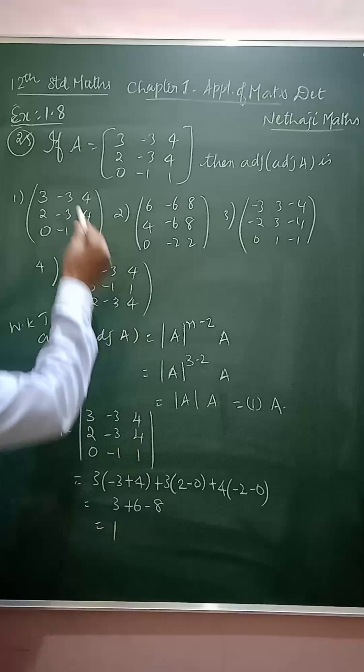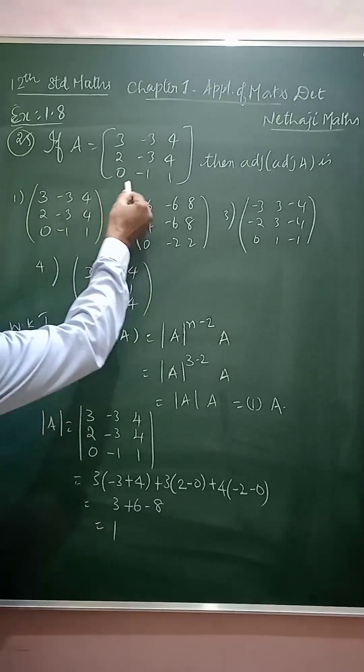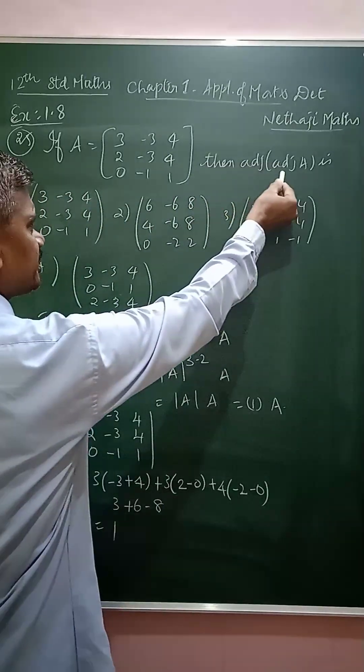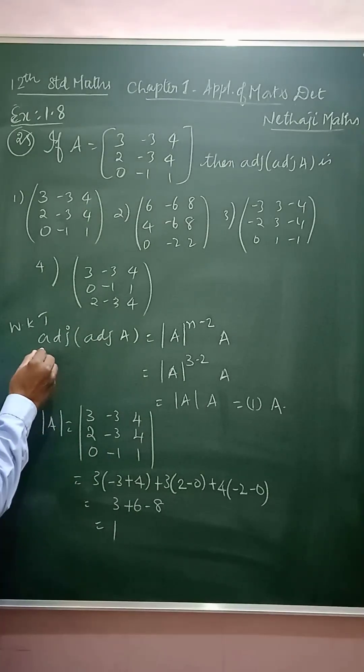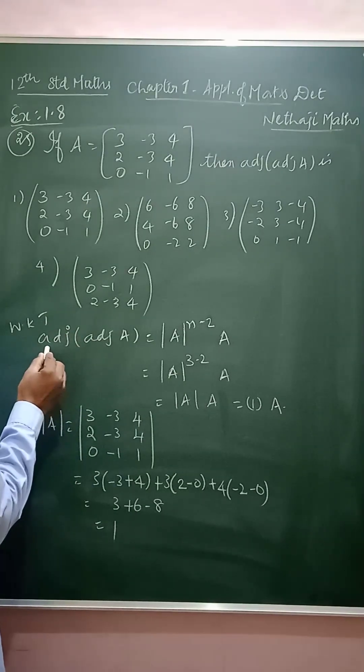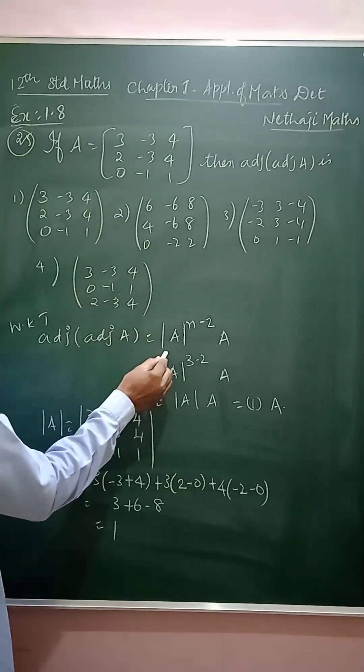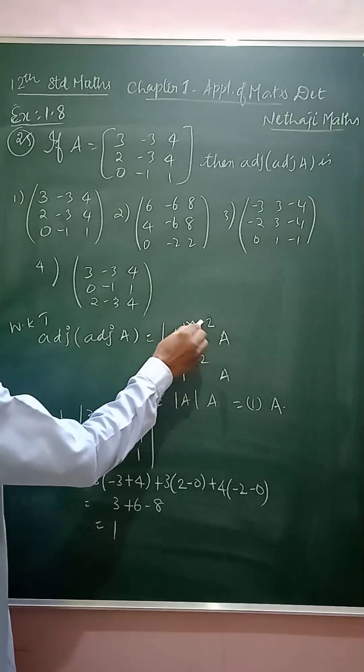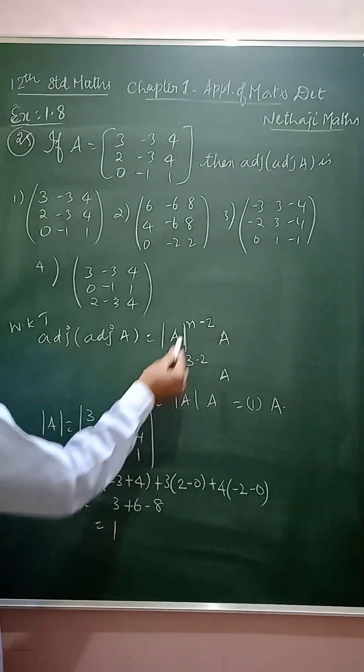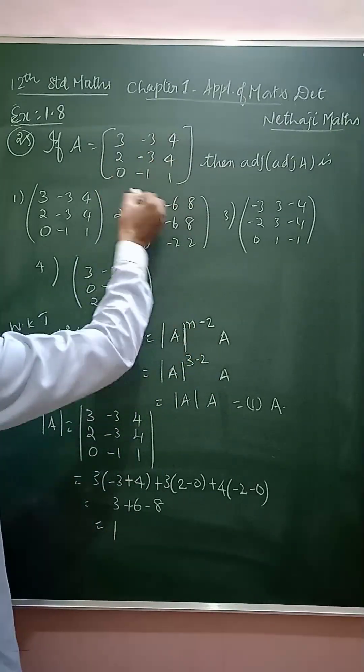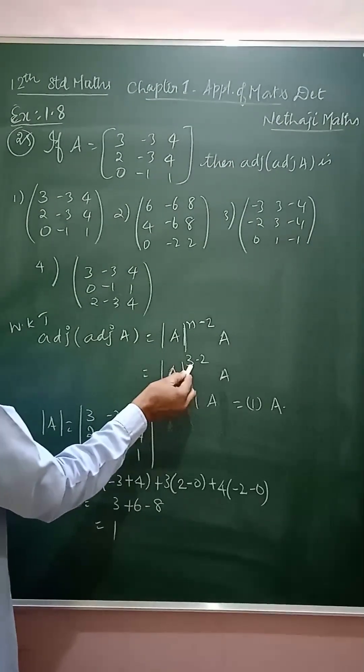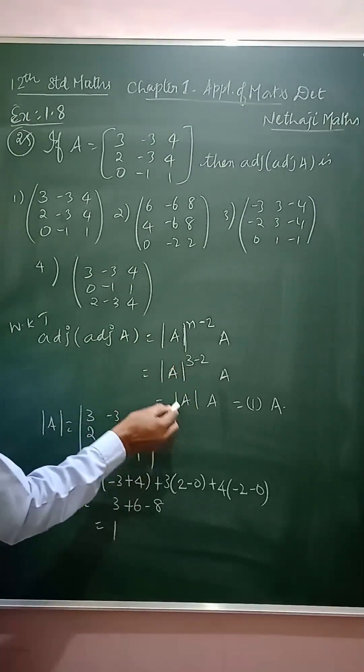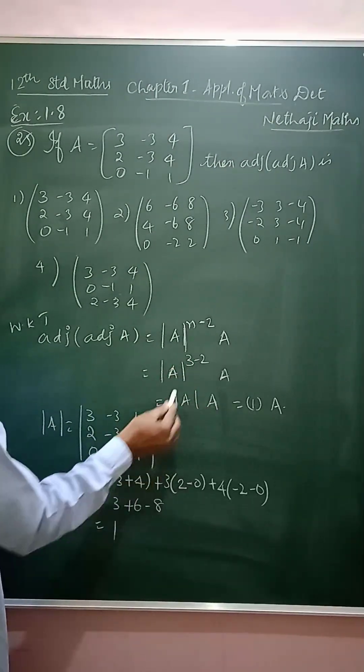That's all. 25th sum from exercise 1.8. The question is: if A is a 3 by 3 matrix, then we have to find the adjoint of adjoint of A. So we have the property that adjoint of adjoint of A equals determinant of A power n minus 2 times A. Substitute the value of n as 3 because it is a 3 by 3 matrix, so 3 minus 2 gives determinant of A times A.